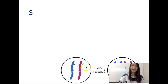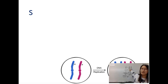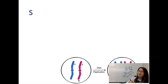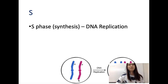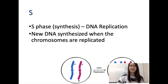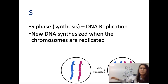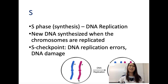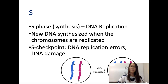S phase: DNA replication — new DNA is synthesized as chromosomes are replicated. If we start with two chromosomes, we still have two chromosomes after, but now we have four DNA molecules. The S checkpoint checks for DNA replication errors and DNA damage — for example, ensuring no DNA strand was left unreplicated or has too many mutations.